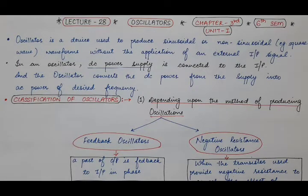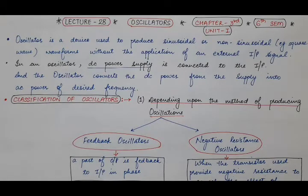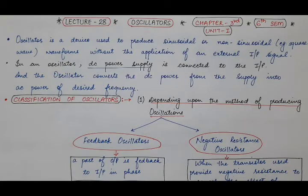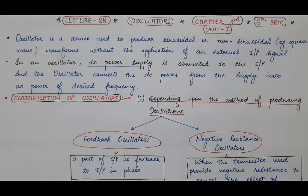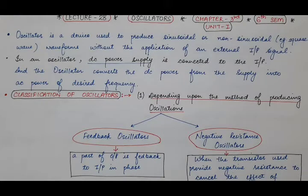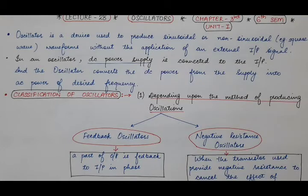We have already studied that when the feedback is negative, that device acts as an amplifier. But when the feedback is positive — that is, the feedback portion is in phase with the input of the amplifier — that amplifier gets converted into an oscillator. So the first type is feedback oscillators, in which a small portion or the whole of the output voltage is fed back to the input, and it is in phase with the input.